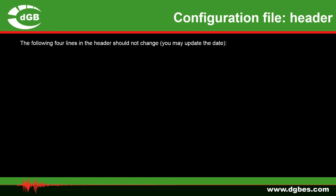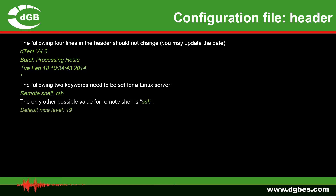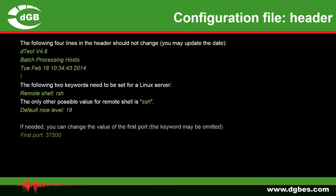Looking at the header now. The following four lines in the header should not change, although you may update the date. The first four lines are: detect, the version, the title, and the date, rounded off with an exclamation mark. You then need to set the following two keywords for the Linux server. The remote shell can either be RSH or SSH. You can set the default nice level, which is the priority given to the processing on the nodes. And you may change the value of the first port from its default value of 37,500. This section should end with the second exclamation mark line.